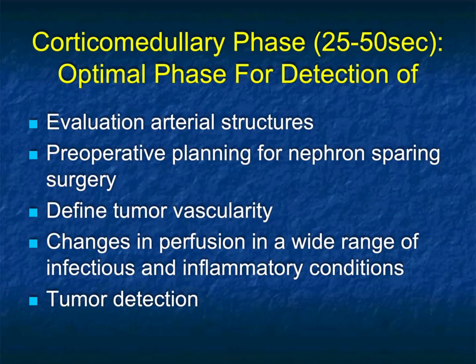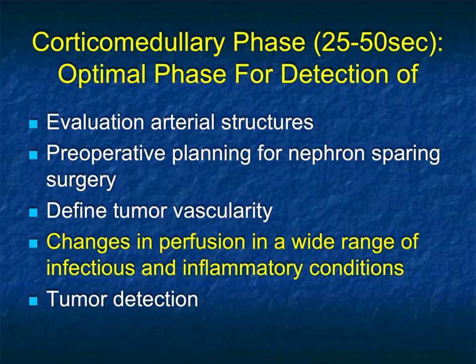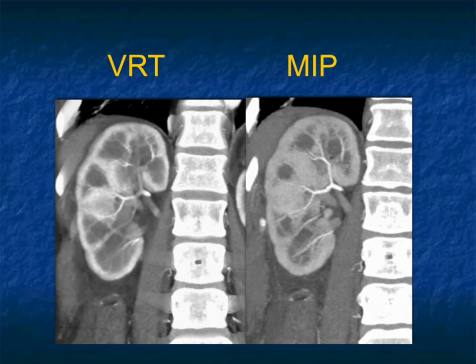There is significant overlap in terms of non-neoplastic conditions across infectious and inflammatory etiologies, which we'll address. Regarding tumor detection, sometimes small vascular lesions of 1 cm many urologists will leave alone, but detection remains very critical. The main part of this talk will focus on infectious and inflammatory conditions rather than tumors.